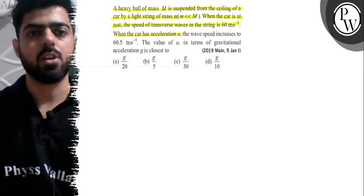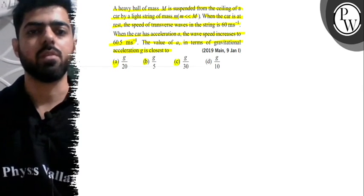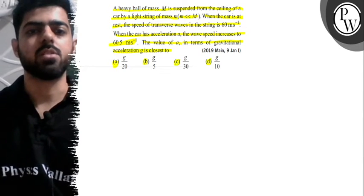When the car has acceleration A, the wave speed increases to 60.5 meters per second. The value of A in terms of gravitational acceleration G is closest to. The options given are: A) G by 20, B) G by 5, C) G by 30, D) G by 10.